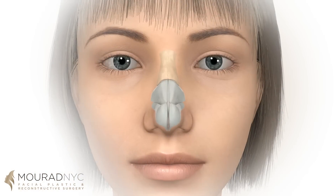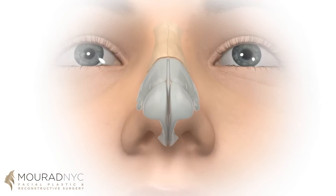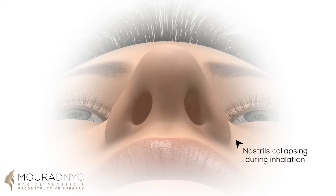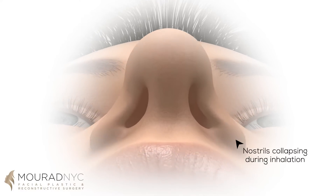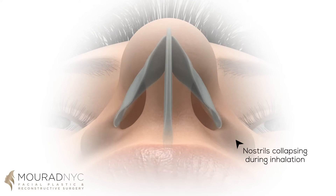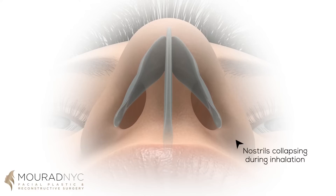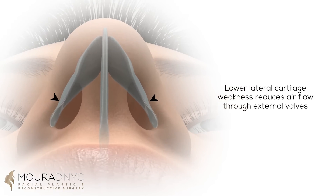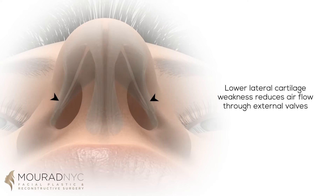Difficulty in breathing can occur due to what is referred to as nasal valve collapse. When the cartilages of the middle or lower third of the nose are weakened or narrowed, they can collapse during inspiration. This narrowing can occur or be worsened as you breathe through the nose. In very severe cases, the nostrils can pinch on themselves causing a complete obstruction.